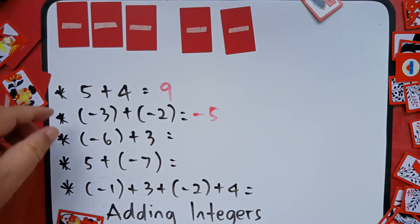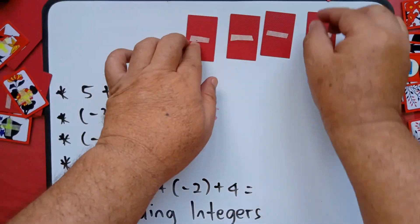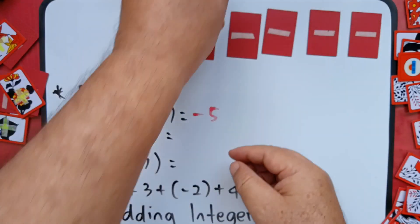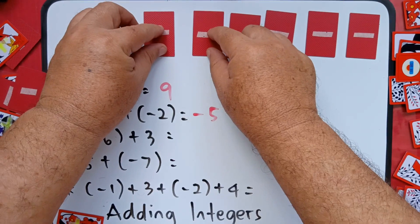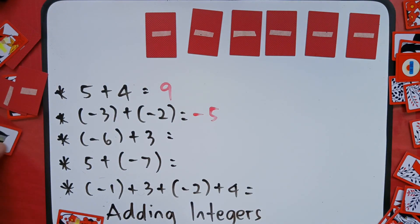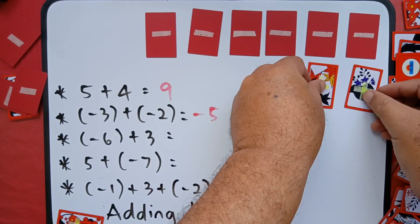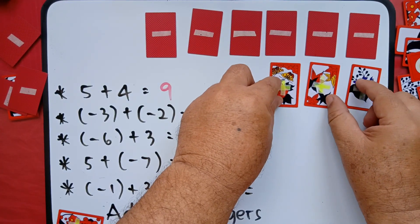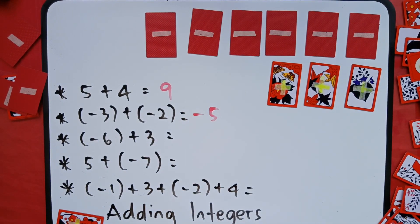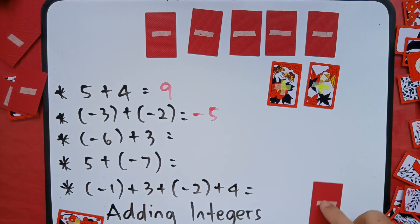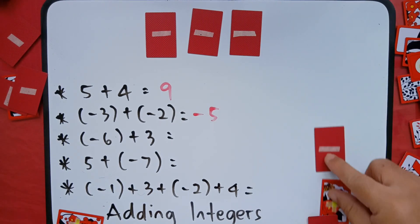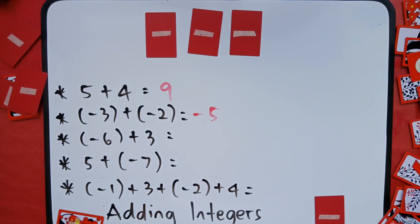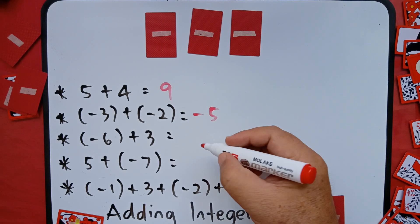Next: negative six plus positive three. Since they have different signs, we have to remove the neutral pairs. We will remove this pair, this pair, and this pair. What will remain are three negative tiles.